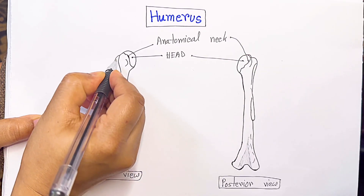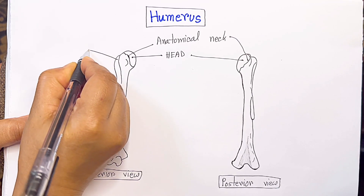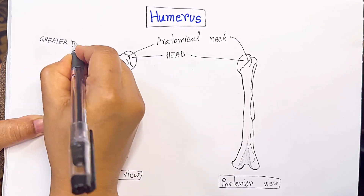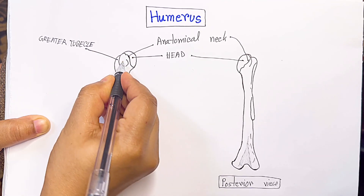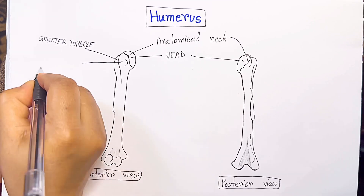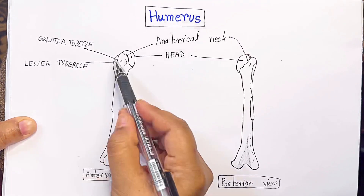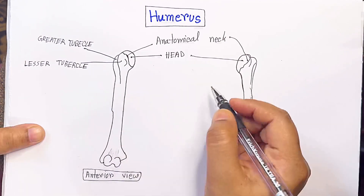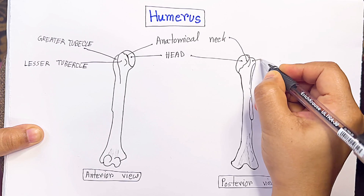This is the greater tubercle, and this is the lesser tubercle. Greater tubercle, lesser tubercle — and in the posterior view, this is the greater tubercle.